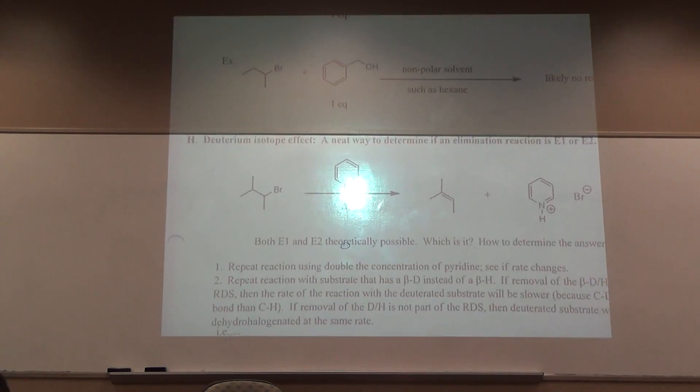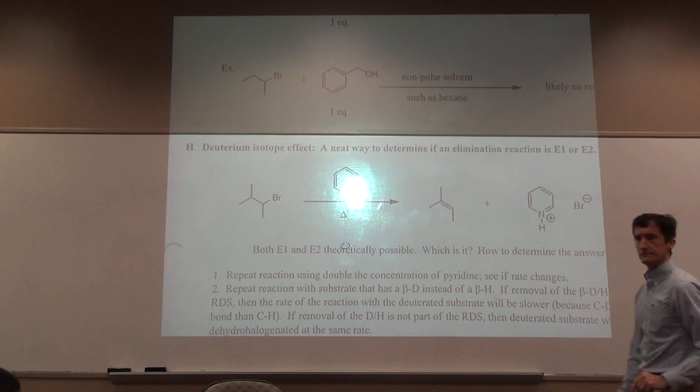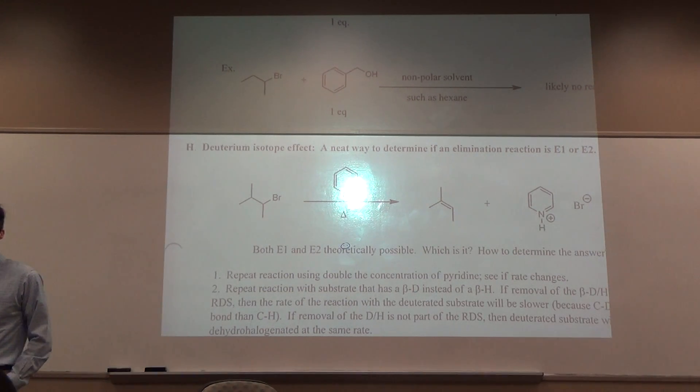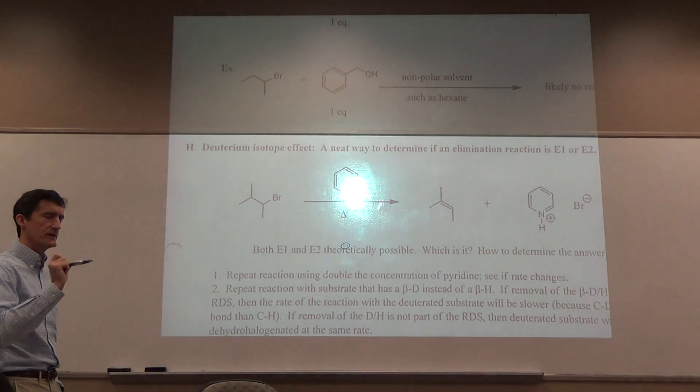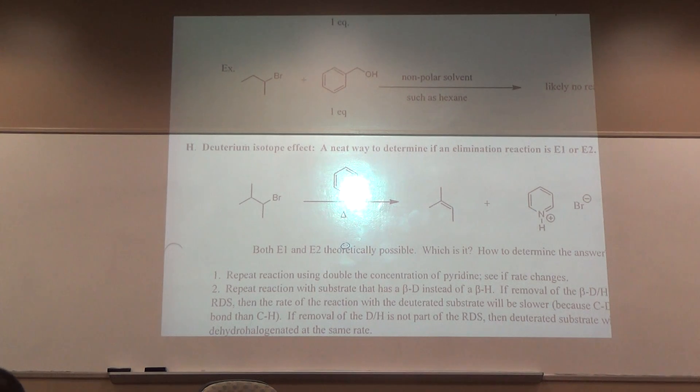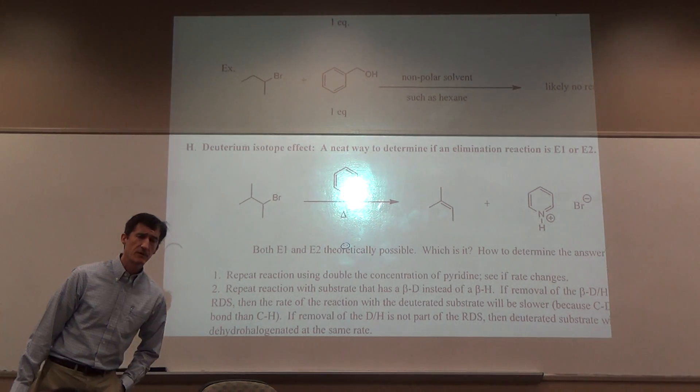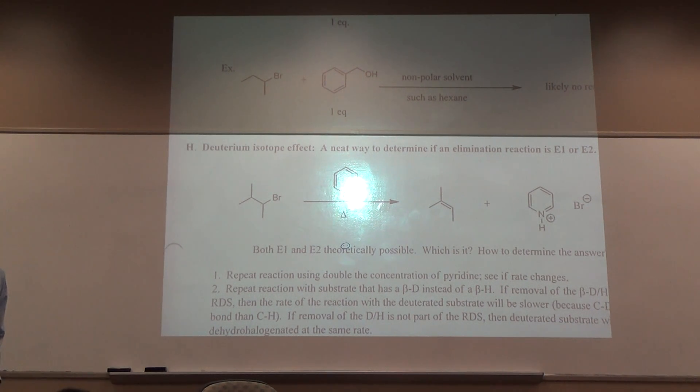But deuterium is another way to do this. Because, let me ask you this. Two different mechanisms, elimination mechanisms. Which elimination mechanism is the beta hydrogen abstracted in the rate determining step? What's the rate determining step of the E1? It's the same as SN1. Carbocation being formed. There's no abstraction of beta hydrogen in that step. The abstraction of beta hydrogen comes after that and faster.